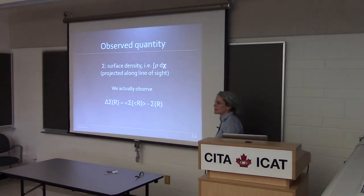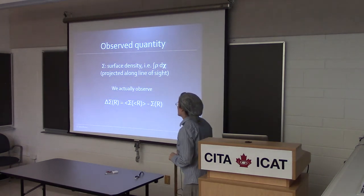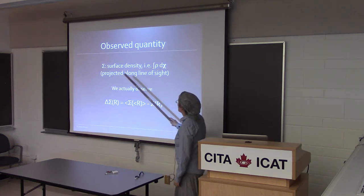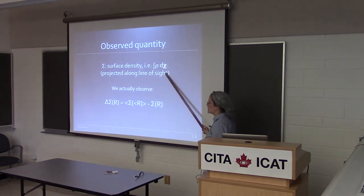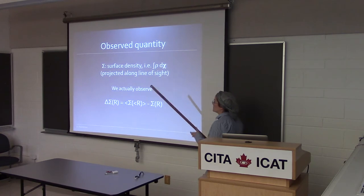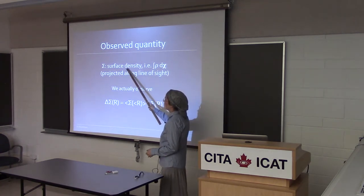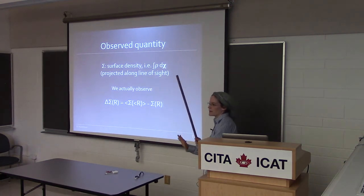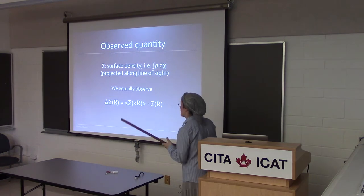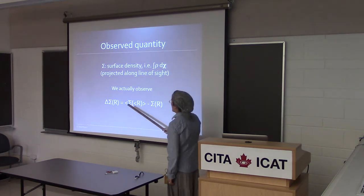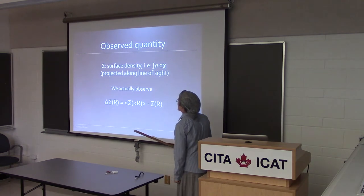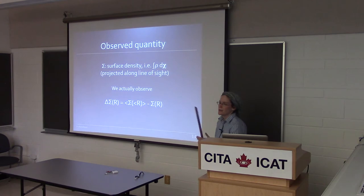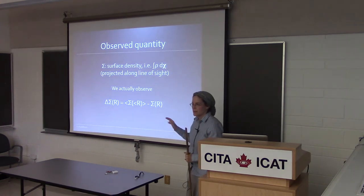In practice, lensing is sensitive to projected quantities. If sigma is the surface density — a 3D density projected along the line of sight in the lens plane — we don't exactly measure the surface density. The mean matter density does not cause lensing. It's the mean surface over-density that causes lensing. So lensing is sensitive to what we call delta sigma, which is the average density within some radius minus the value at that radius, so that a flat mass sheet cancels out.